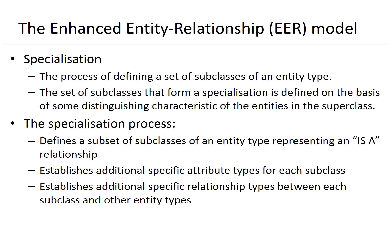The concept of specialization refers to the process of defining a set of subclasses of an entity type. The set of subclasses that form a specialization is defined on the basis of some distinguishing characteristic of the entities in the superclass. As an example, consider a person superclass with subclasses student and professor. The specialization process defines a set of subclasses representing an IS-A relationship. In other words, a student is a person, and a professor is a person. Vice versa does not apply — a person is not necessarily a student or a professor.